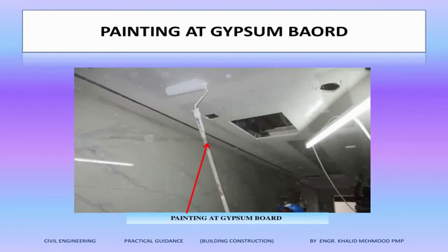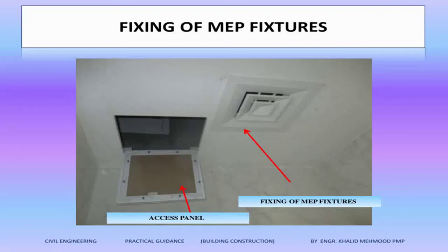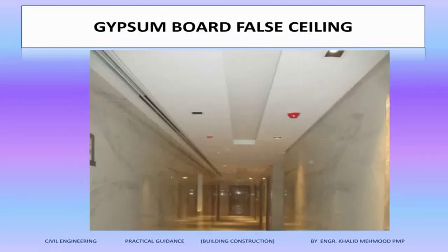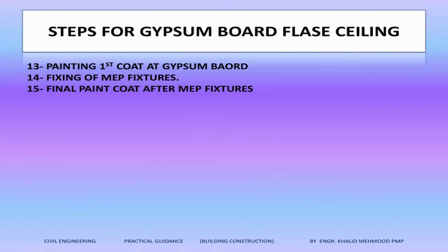After the paint, we are fixing the MEP fixtures. This is the AC grille we are fixing on the gypsum board — it's not a part of the false ceiling system, but this is the MEP fixture we are fixing on the gypsum board. There you can see the access panel and the MEP fixtures fixed on the gypsum board false ceiling system. This is the complete look of the gypsum board false ceiling system after all the suspension, gypsum board finish, painting, and MEP fixtures are finished.